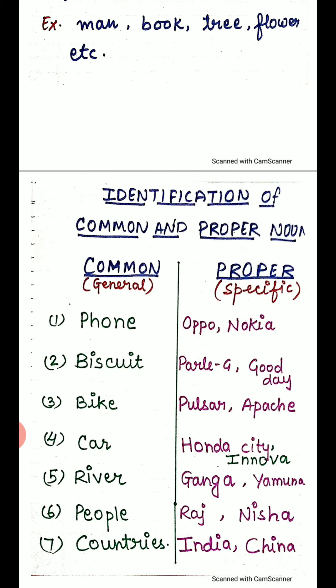Another example: bike. Bike is a common noun. But the specific name of a bike — like Pulsar, Apache, Bullet — those are proper nouns.